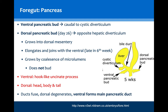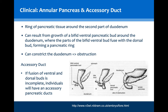When the two buds fuse, a main duct needs to be determined and this is typically that of the ventral bud. However, sometimes an annular pancreas or accessory duct can form. An annular pancreas occurs due to the growth of a bifid ventral pancreatic bud, causing the ventral and dorsal buds to fuse early and begin to mature, leading to a constricting ring around the duodenum. As such, patients will present with symptoms of gastric outflow obstruction, such as vomiting or nausea.